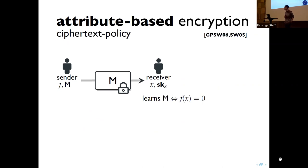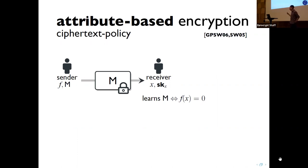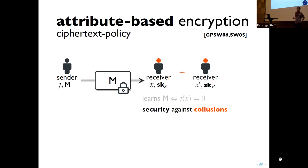This is exactly the notion of attribute-based encryption, or more generally ciphertext-policy attribute-based encryption (CP-ABE), where the sender has a policy f and encrypts a message with respect to that policy. Secret keys are associated with a bit string x specifying attributes. Correctness says that if f(x) = 0 you learn the message, and if f(x) ≠ 0 you learn nothing — even under collusion.